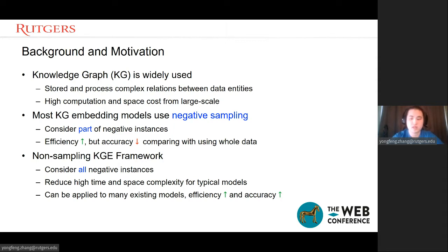That means the negative instances, the number of negative instances is very large. So most current knowledge graph embedding models use negative sampling instead of using the whole data. They only consider part of the negative instances during each training epoch. Comparing with using the whole data to train, negative sampling based methods have higher efficiency, but are a little unstable, and it may hurt the accuracy.